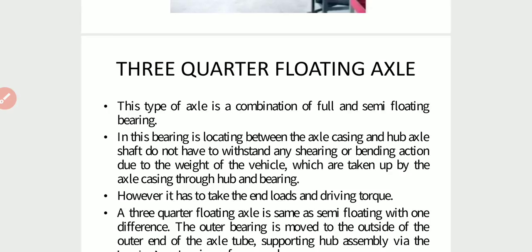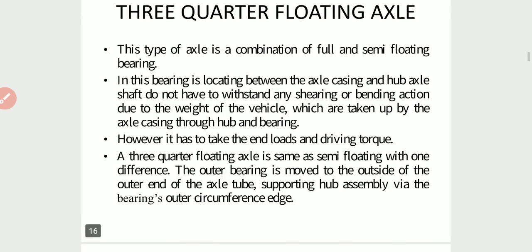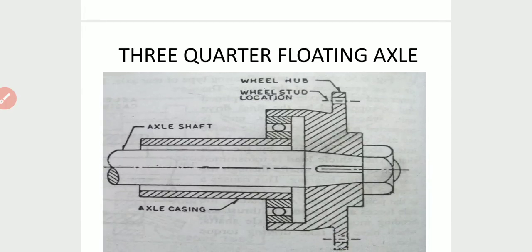The three-quarter-floating axle is a combination of full and semi-floating designs. The bearing is located between the axle casing and hub. The axle shaft does not have to withstand any shearing or bending action due to the weight of the vehicle, which are taken up by the axle casing through the hub and bearing. However, it has to take end loads and driving torque. A three-quarter-floating axle is similar to semi-floating, with the difference that the outer bearing is moved to the outside of the axle tube, supporting the hub assembly via the bearing outer circumference edge. This is the diagram of the three-quarter-floating axle.